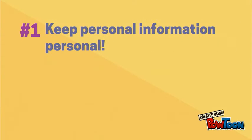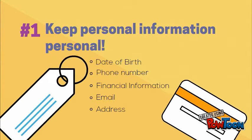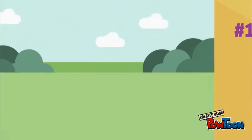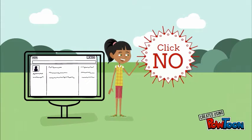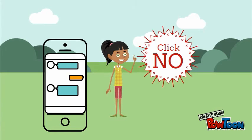Tip number 1. Keep your personal information personal. Your phone number, financial information, address, and email should always stay private. That being said, talking to someone or even friending someone you don't know on social media is a bad move. Know that it's okay to say no.